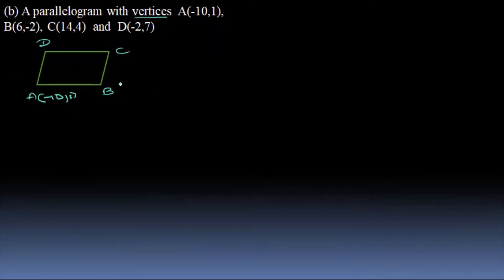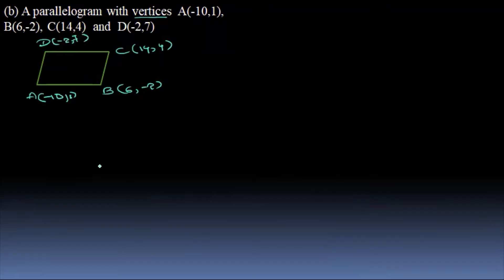B is (6, -2). C is (14, 4). D is (-2, 7). So, this is the one that we have to write: A, B, B, C, C, D, A, D.